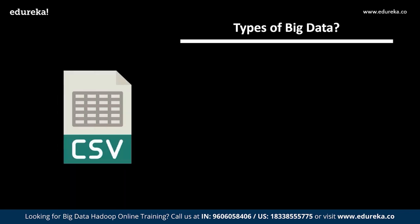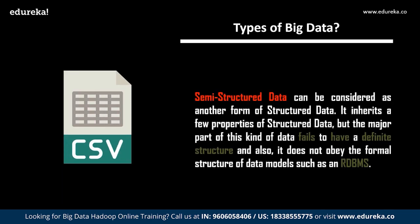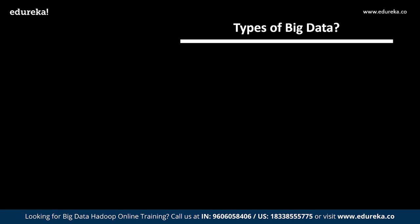Semi-structured data can be considered another form of structured data. It inherits a few properties from structured data, but the major part of this data fails to have a definite structure and does not obey the formal structure of data models such as an RDBMS. A very common example of semi-structured data is a CSV, or comma-separated values, file.